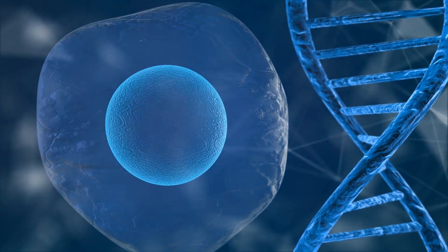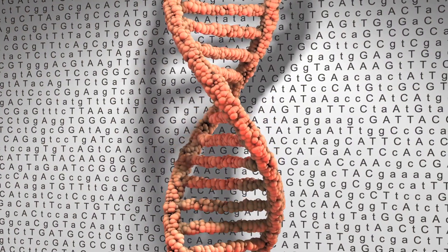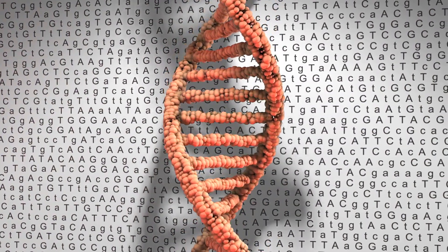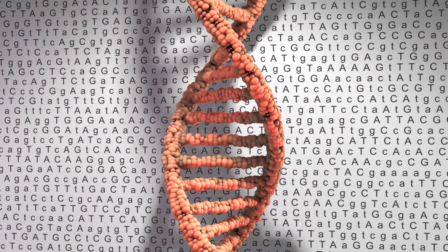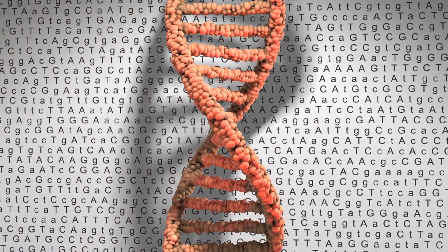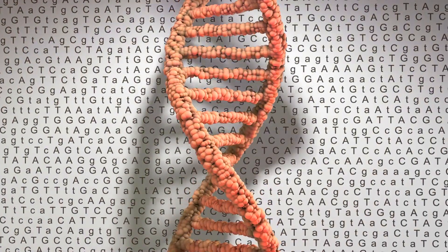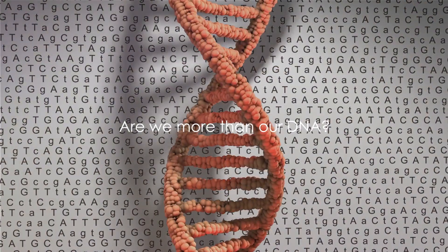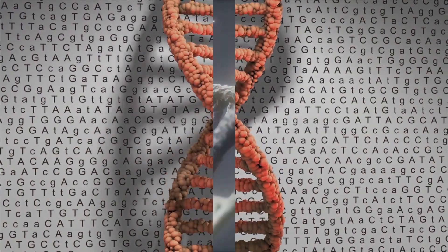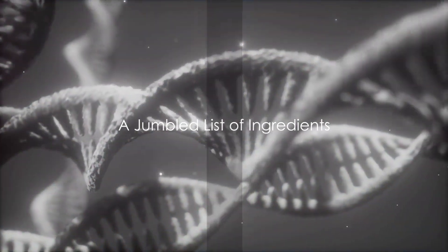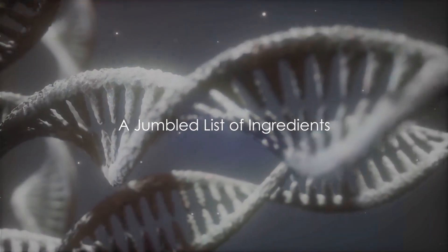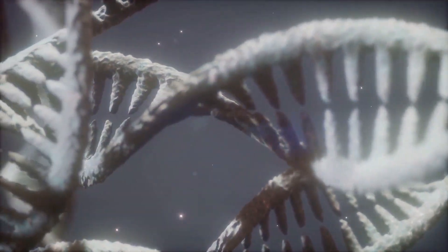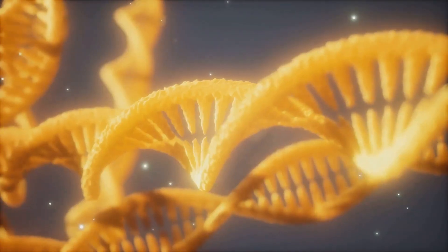Wells pointed out that biologists can mutate a fruit fly embryo in every conceivable way, but the outcomes are limited: a normal fruit fly, a defective fruit fly, or a dead fruit fly. So the question arises — are we more than the sum of our genes? Let's think of DNA not as a blueprint, but as a potentially scrambled list of ingredients used differently by different cells at different times.